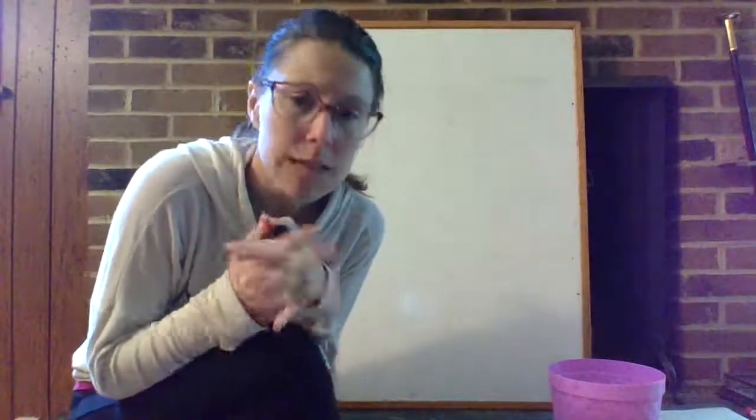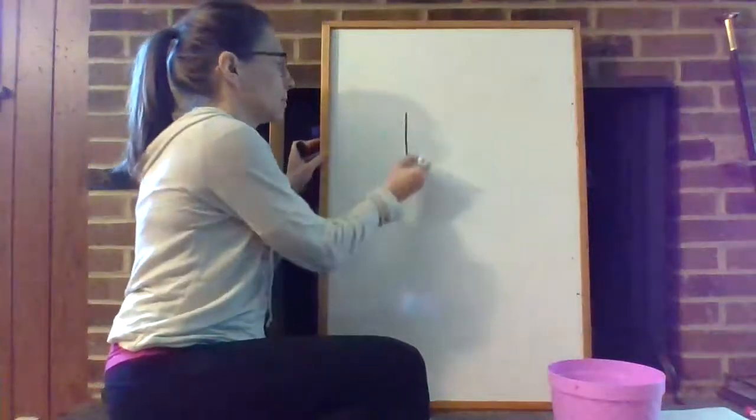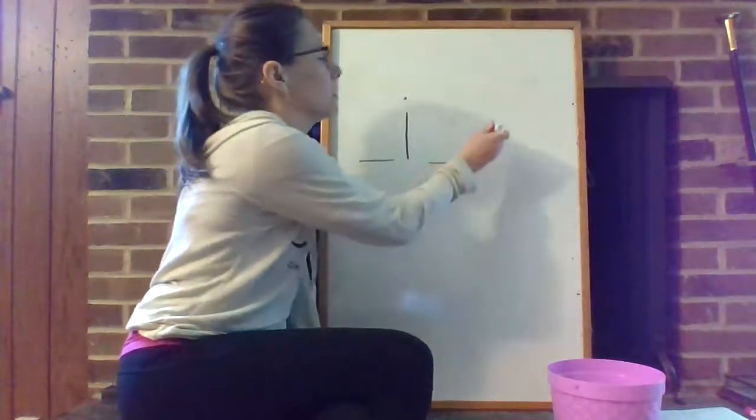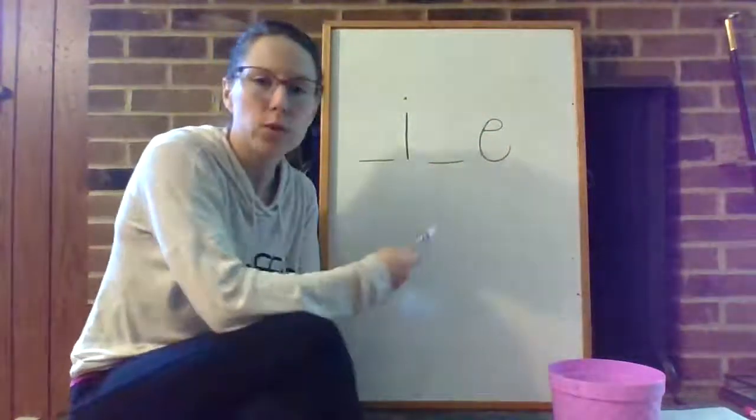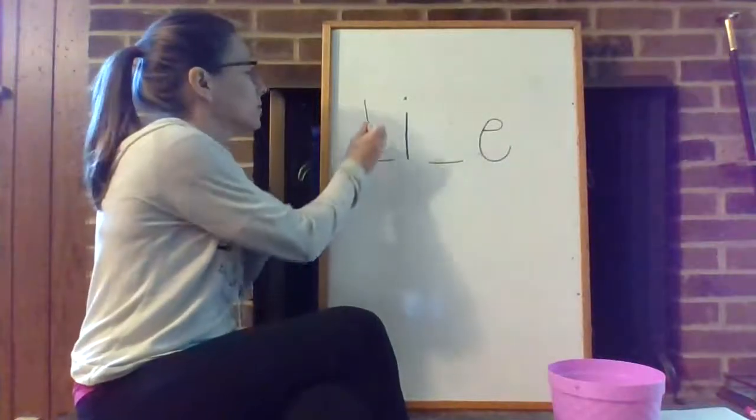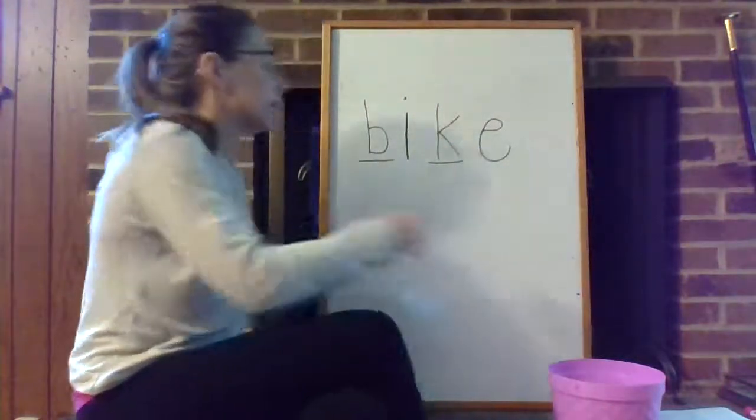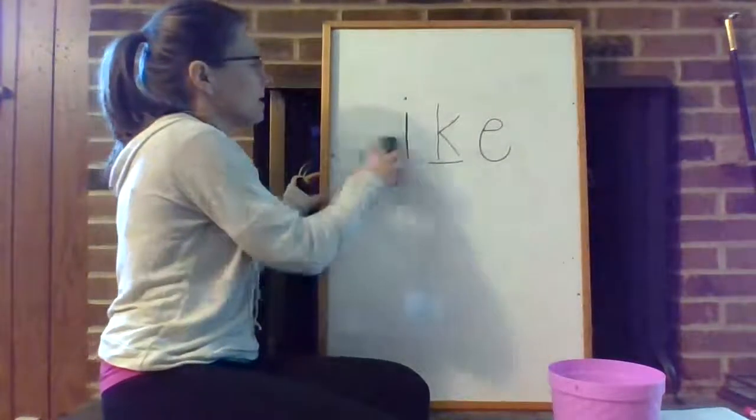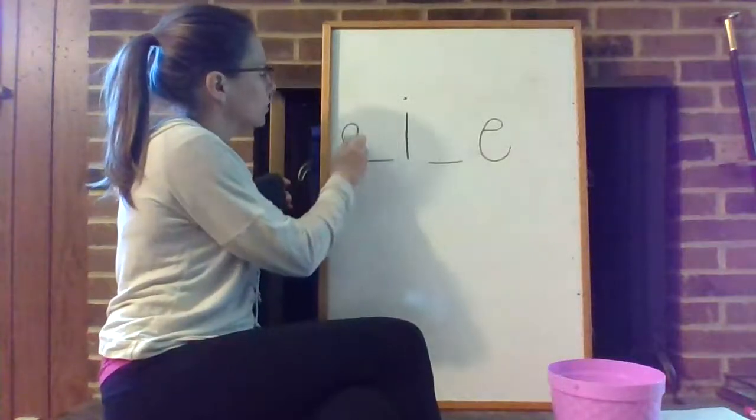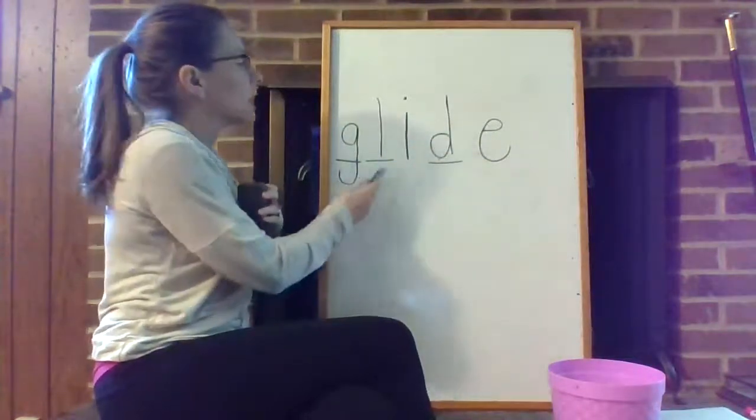So our focus this week is on the long vowel I. We're doing that CVCE: the consonant, vowel I, consonant, and that silent bossy E at the end. So what's one word that you could make knowing this pattern? How about this one? Bike. Or if we had two consonants at the beginning like this we could make this word. What's that word? Glide.